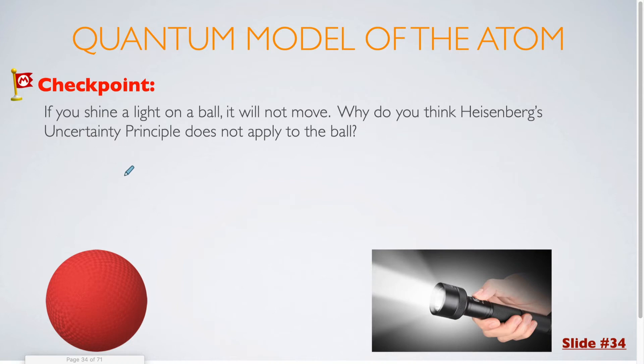Obviously physics works very differently on the quantum scale as opposed to what we are considering on the macro scale. As we are shining the light on the ball, it is not providing enough energy to actually move it due to the mass of the ball. The mass of a subatomic particle such as an electron is very different, and the electron would be moved by the photons that are interacting with it.